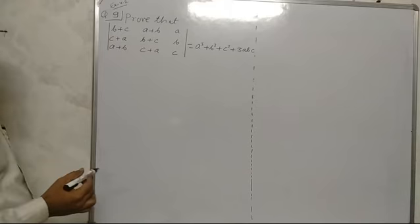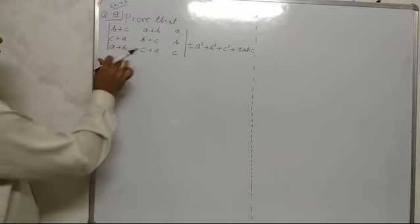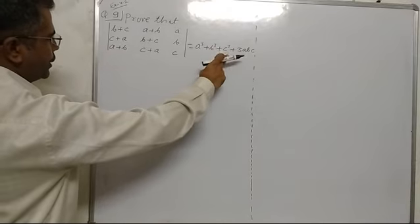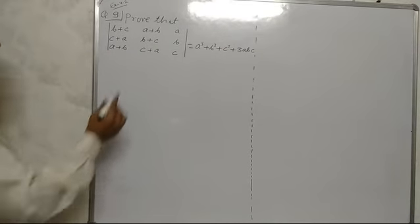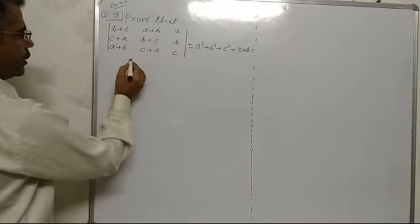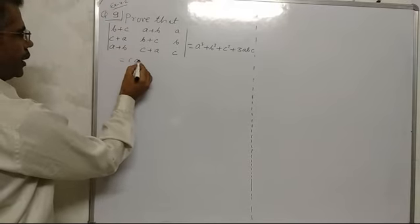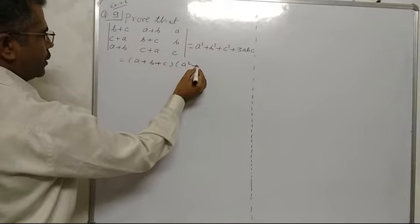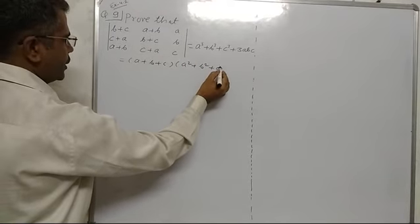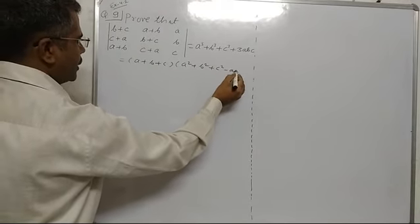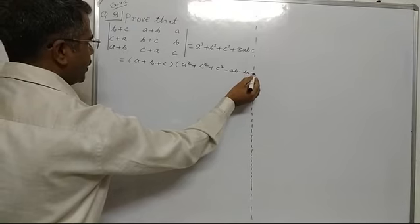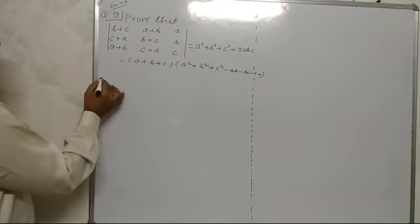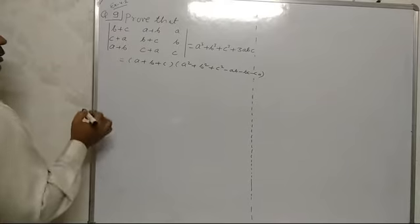Solution number 9. This determinant equals — we have to prove it equals A cubed plus B cubed plus C cubed minus 3ABC. We know that this identity equals A plus B plus C times A squared plus B squared plus C squared minus AB minus BC minus CA.